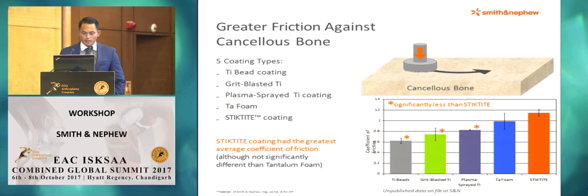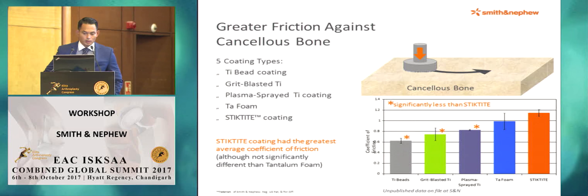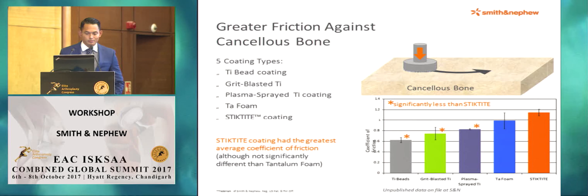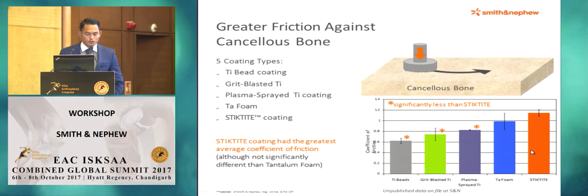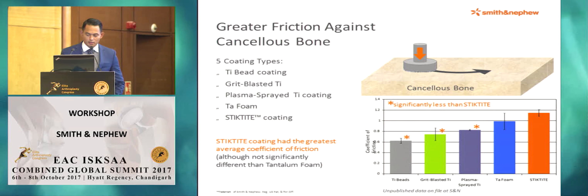Greater friction against cancellous bone was also seen in another study investigating five coating types: titanium bead coating, grit-blasted titanium, plasma-sprayed titanium coating, tantalum foam, and Stick-Tie coating. Stick-Tie coating had the greatest average coefficient of friction — not statistically significant versus tantalum foam, but statistically significant against plasma spray, grit-blasted, and titanium beads.